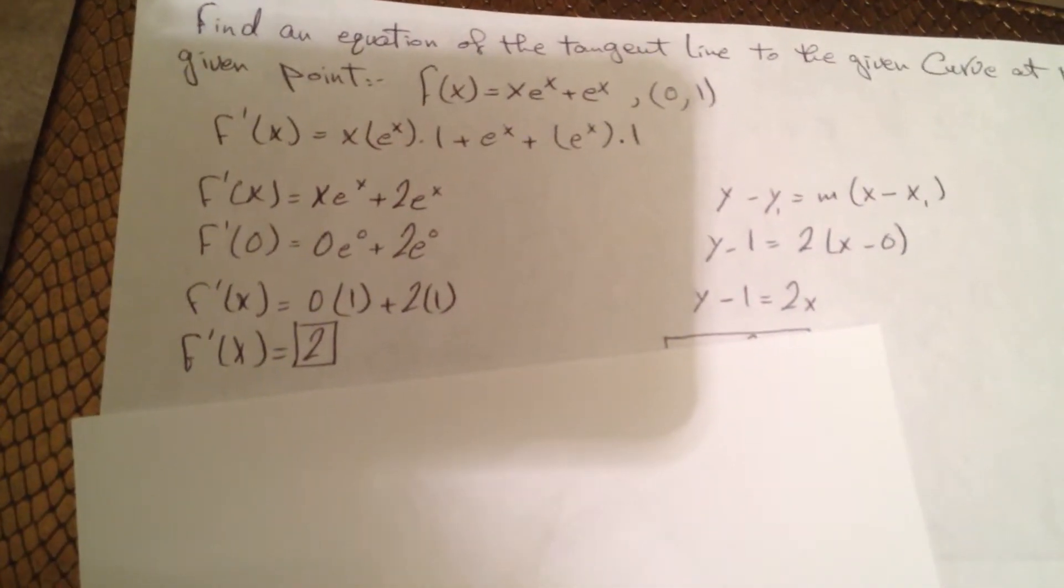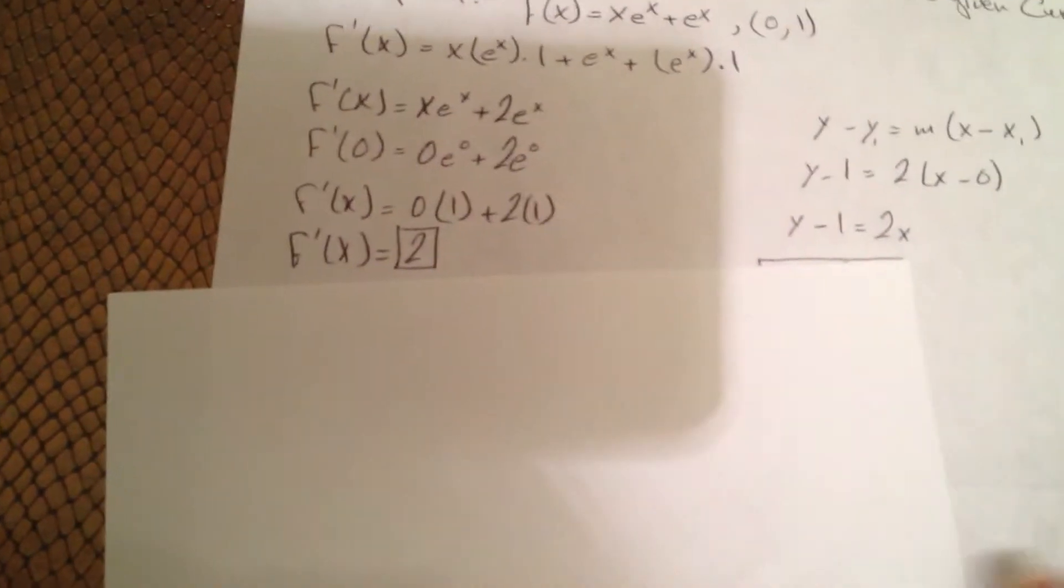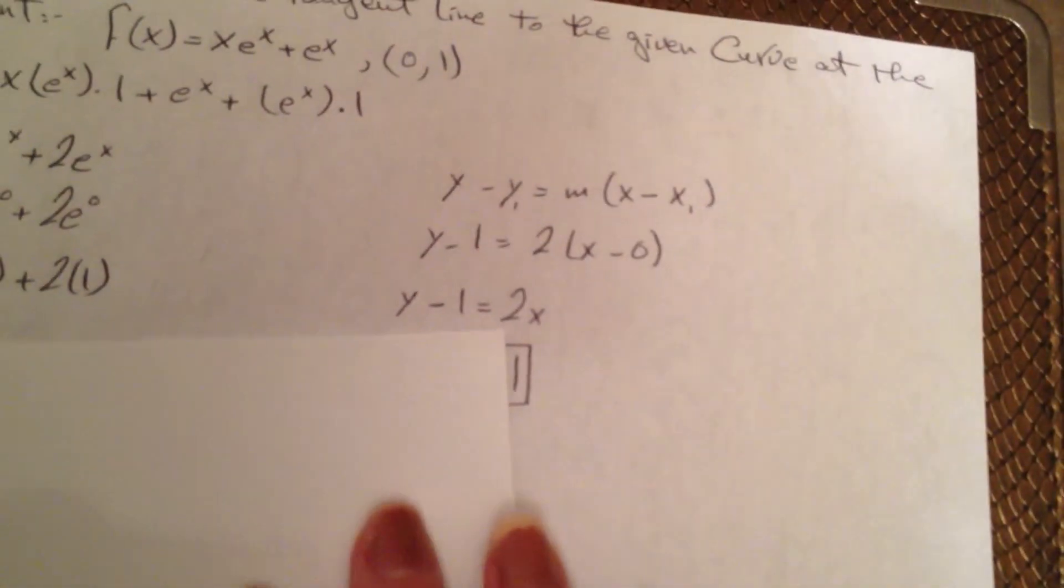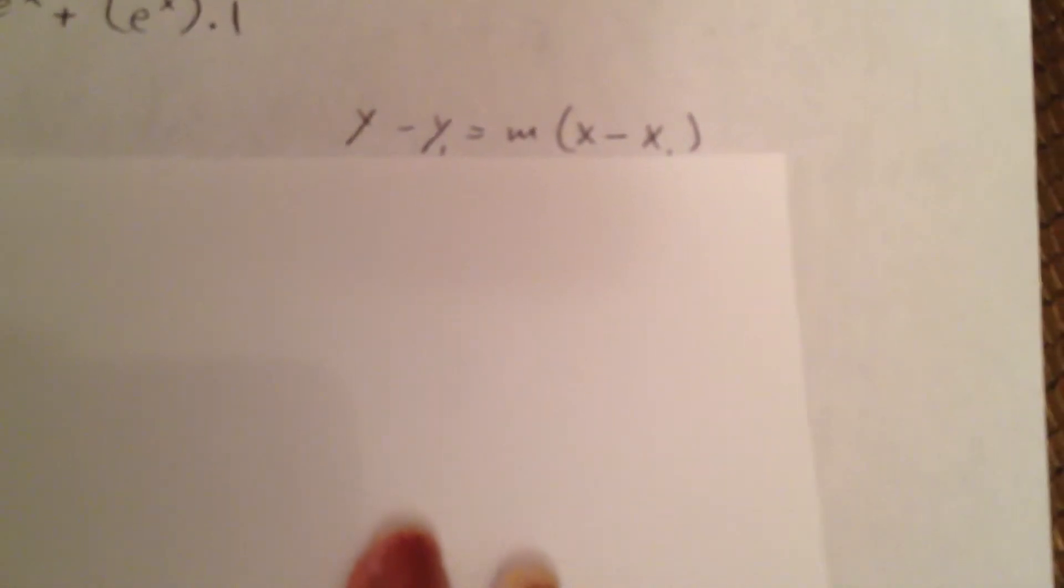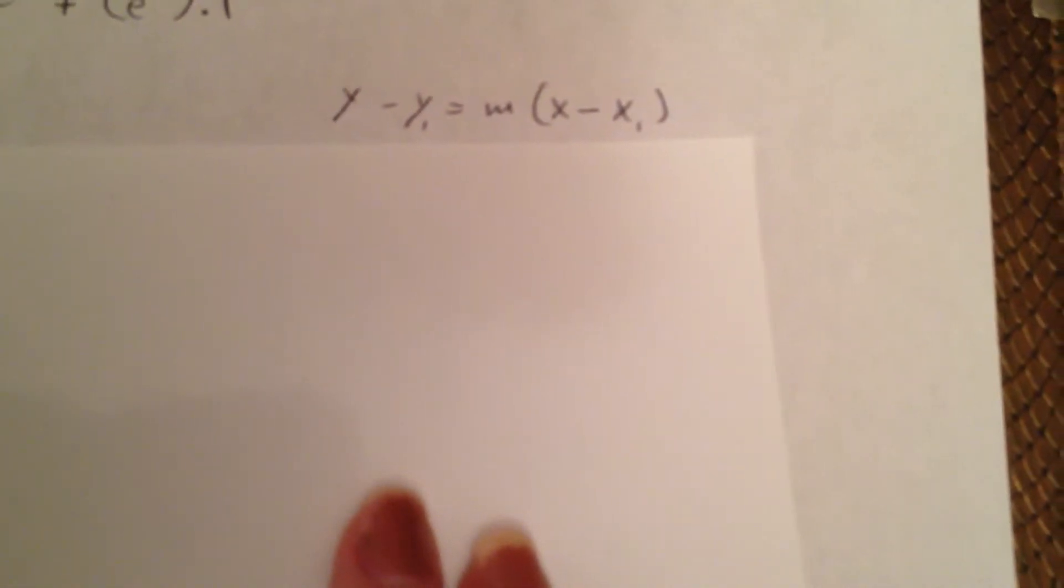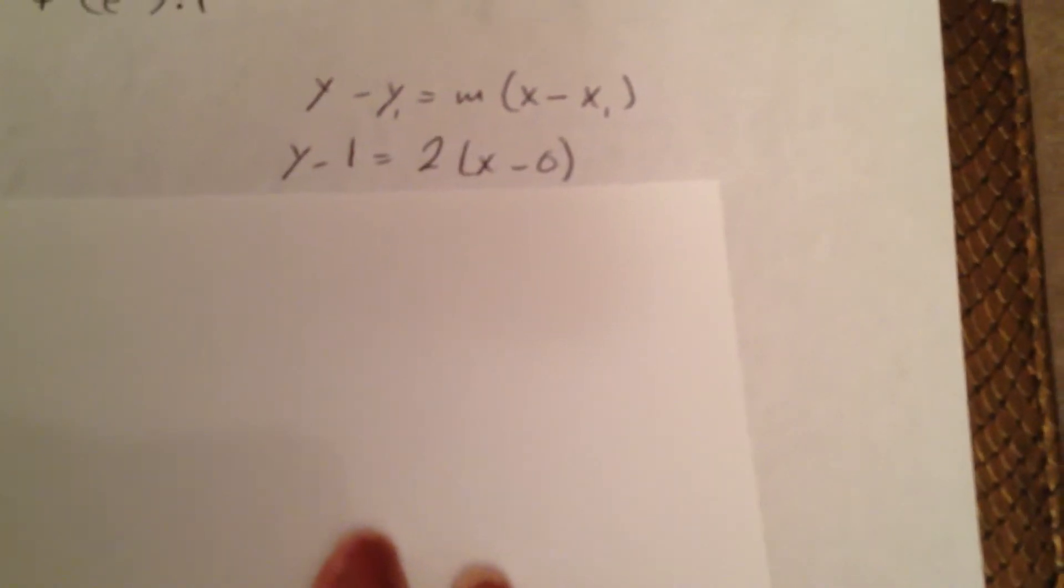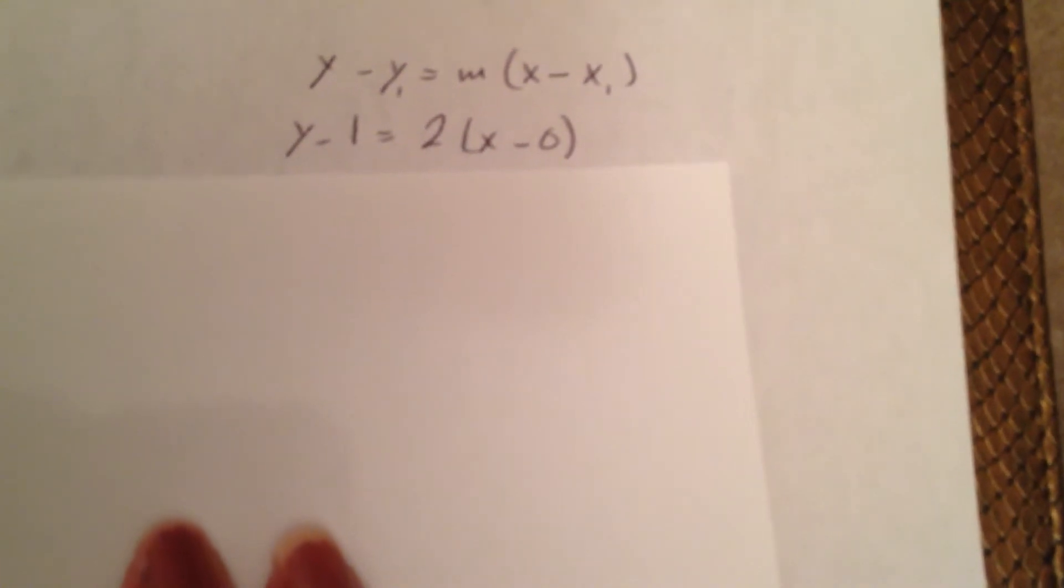The derivative equals 2, so I will plug this into the slope equation. y minus y1 equals slope times x minus x1. So y minus 1 equals 2 times x minus 0.